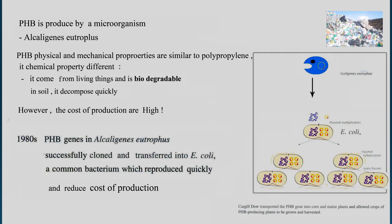the PHA genes from this bacteria into a fast-growing bacteria, as shown in this picture. This original bacteria grows pretty slowly, but when you transfer the genes onto a fast-growing bacteria, for example E. coli —